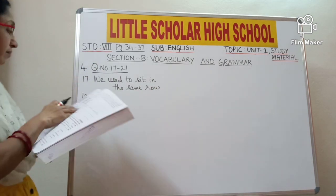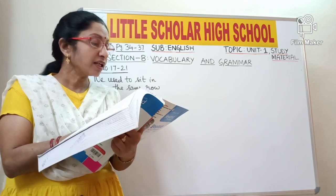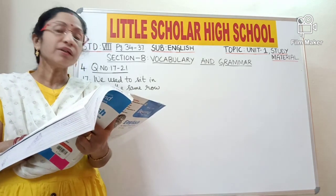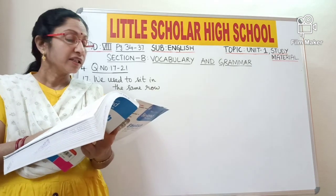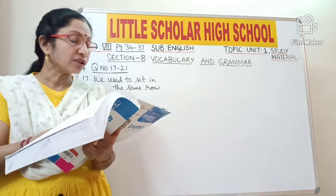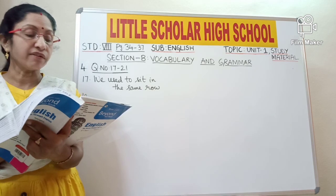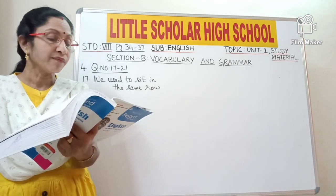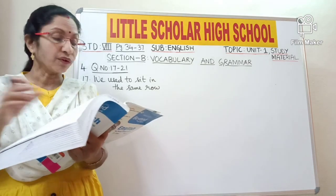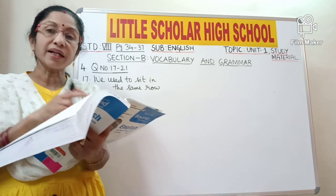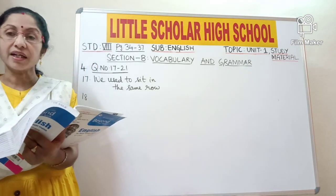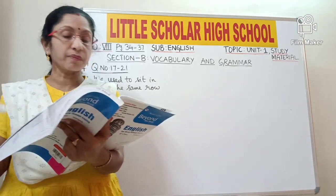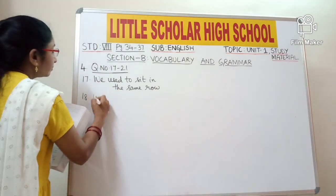Question number 18: 'I remember how Padmanabhaya sir our class teacher appreciated us why we got the first prize in district science fair.' The question word 'why' is used as a conjunction here, but it is not suitable. These two sentences should be joined with the conjunction 'when'. So 'why' will be replaced with 'when': 'I remember how Padmanabhaya sir appreciated us when we got the first prize in district science fair'.